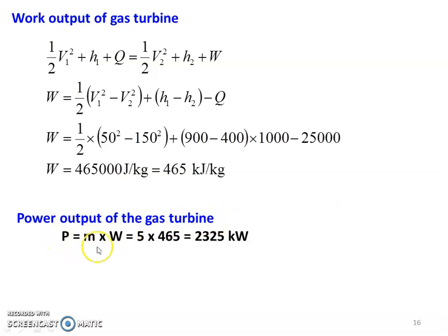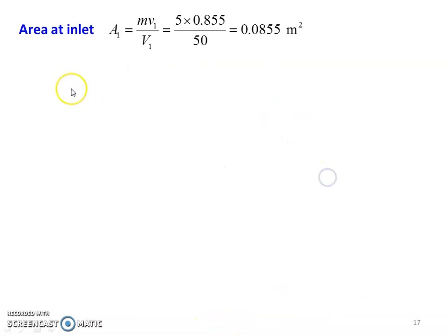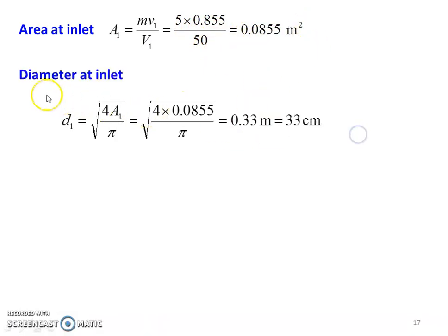Power output of the gas turbine: P equals M times W equals 5 times 465 equals 2325 kilowatt. Specific volume at inlet: V1 equals R·T1 divided by P1, using P1·V1 equals R·T1. So V1 equals 0.285 times 300 divided by 100 equals 0.855 meter cube per kilogram. Area at inlet from continuity equation: M equals A1·V1 divided by specific volume V1, so A1 equals 5 times 0.855 divided by 50 equals 0.0855 meter square. Diameter at inlet: D1 equals square root of (4·A1 divided by pi) equals square root of (4 times 0.0855 divided by pi) equals 0.33 meter, which is 33 centimeter.